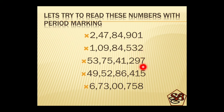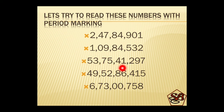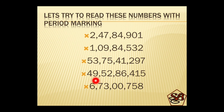Third number: first comma after three digits — ones, tens and hundreds. Then thousands, ten thousands — second period. Then lakh, ten lakh — third period. The number formed is 53 crore, 75 lakh, 41 thousand, two hundred and ninety seven. Next number has three commas, so we can make out that it starts from crores: forty-nine crore, 52 lakh, 86 thousand, four hundred and fifteen.